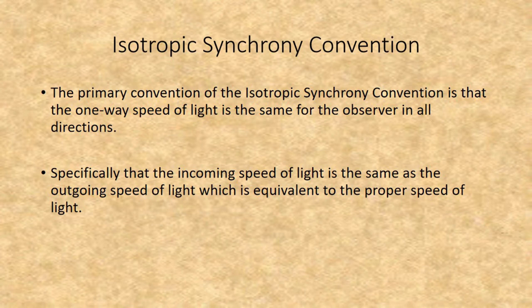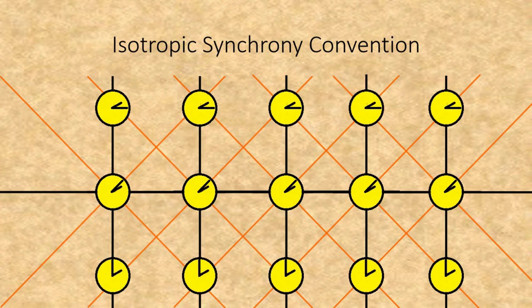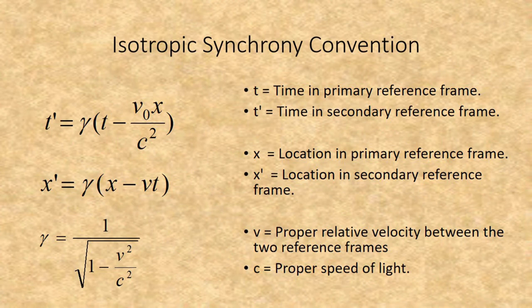The primary convention of the Isotropic Synchrony Convention is that the one-way speed of light is the same for the observer in all directions — specifically, that the incoming speed equals the outgoing speed, which is equivalent to the proper speed of light. It must be remembered that despite being commonly used, it is still just a convention, and under relativity, the one-way speed of light cannot be measured independent of a clock synchrony convention. Within a given convention, the one-way speed of light will always be measured as what is assumed by that convention, while the two-way speed will always be c. In the Isotropic Synchrony Convention, clocks are synchronized across space but not time, such that any time you look at a distant object, you are looking into the past.